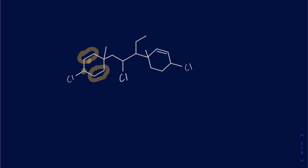The first chiral center I actually see is going to be this guy right there — that carbon has chlorine on the bottom, and the left side and the right side of the rings are different, and the fourth atom is going to be the hydrogen. In addition to that, I see this next one right there, which has a hydrogen, an ethyl group on top, and the left side and right side of the molecule are different.